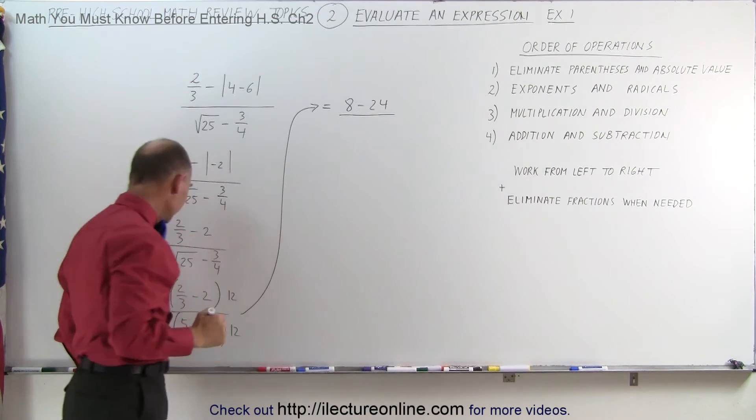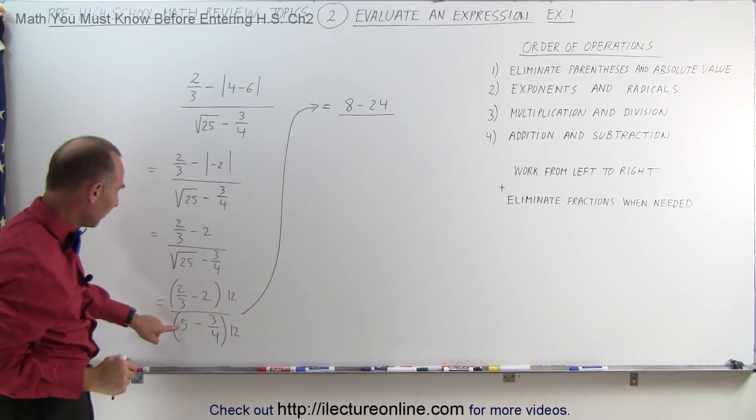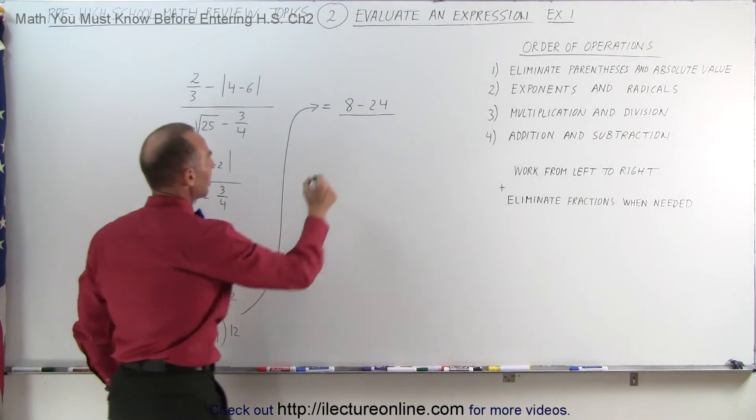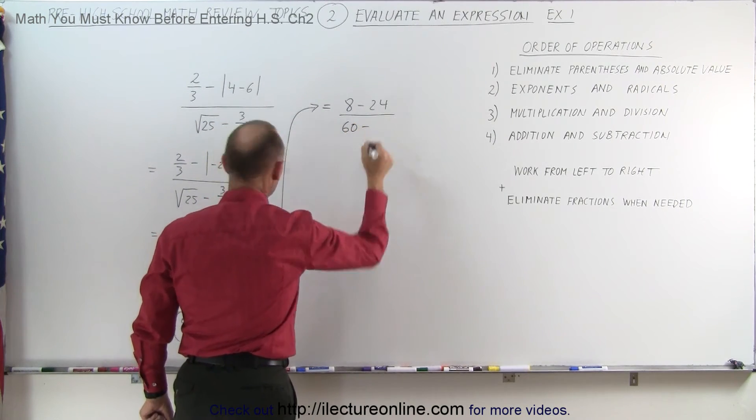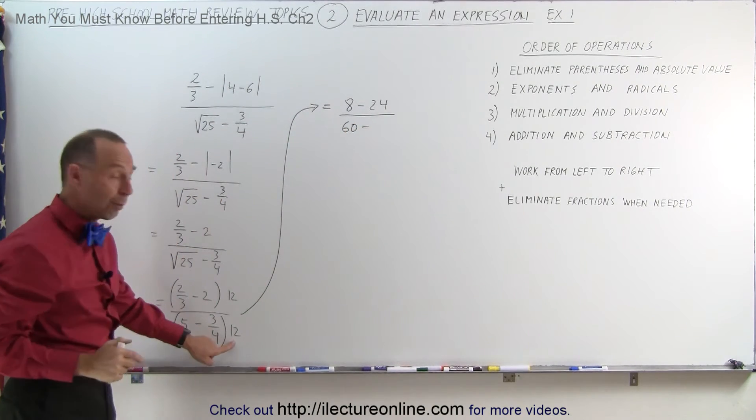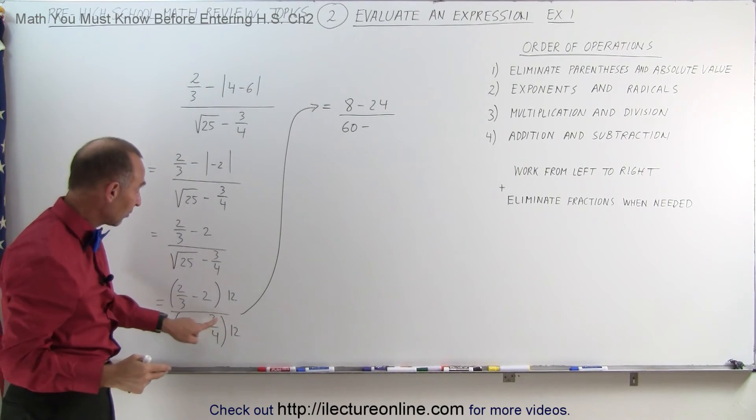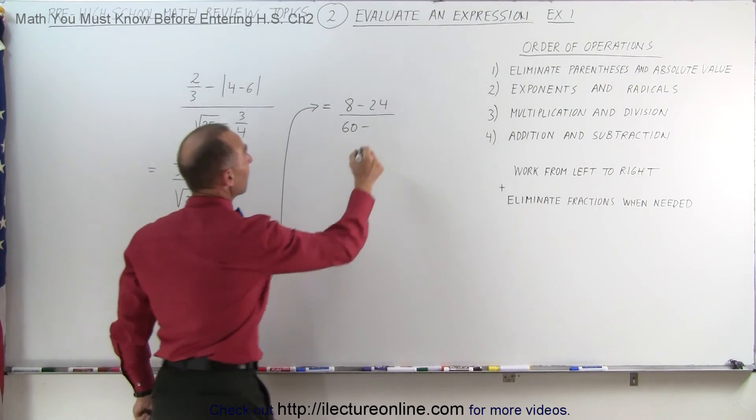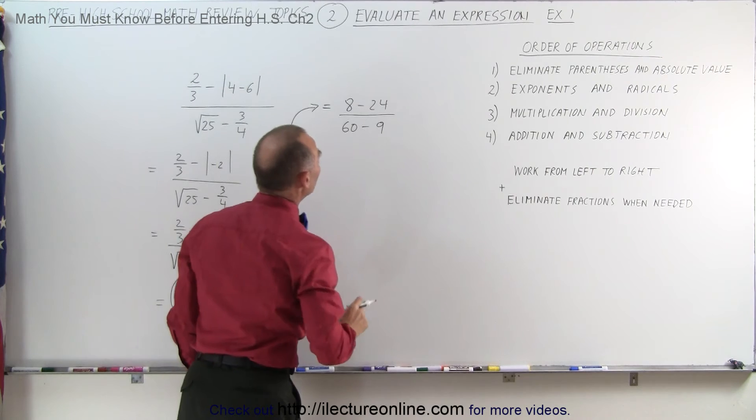Divided by, in the denominator we have 5 times 12 which is 60, minus - now 4 goes into 12 three times, so 12 divided by 4 is 3, 3 times 3 is 9 times a minus, that's -9.